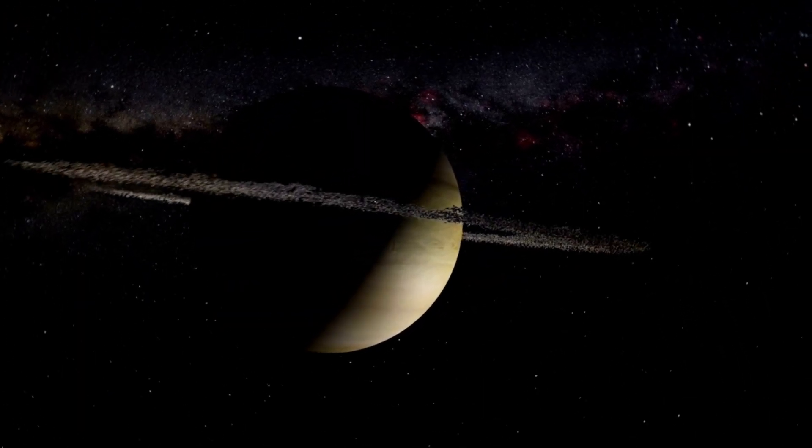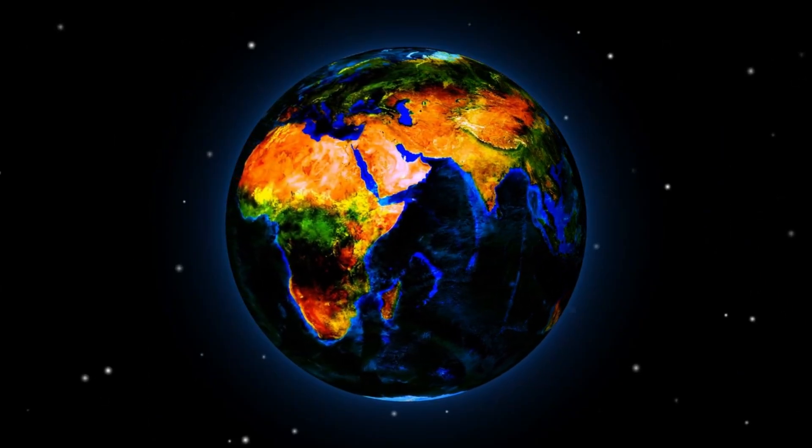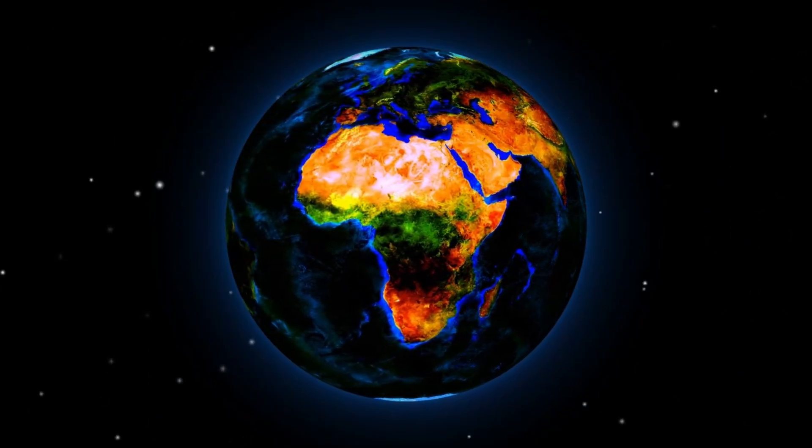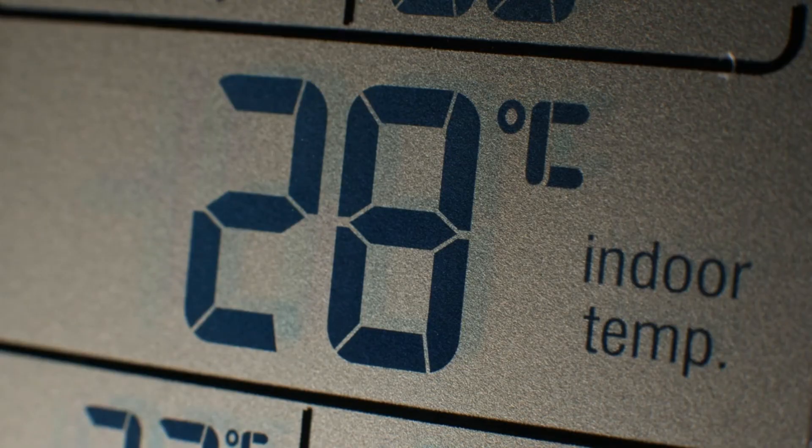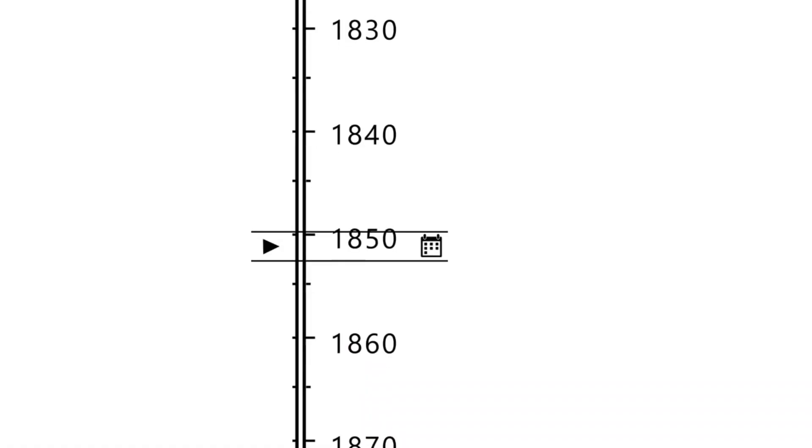Webb didn't just take a single snapshot. Instead, it painstakingly collected tiny amounts of light over weeks, stacking data to reveal what was previously lost in noise. In Proxima b's case, that meant pulling its feeble heat signature out from behind the much brighter light of Proxima Centauri. The result was not just a simple image, but a detailed measurement of the planet's temperature differences, surface reflectivity, and possible atmospheric retention.